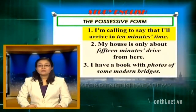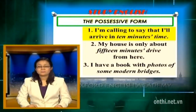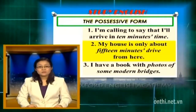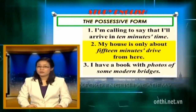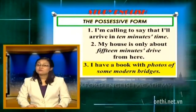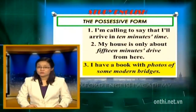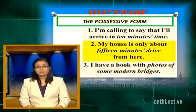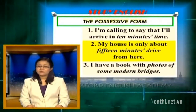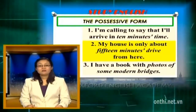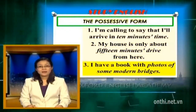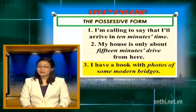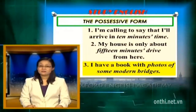Sau đây là một số câu minh họa cho cách dùng sở hữu của danh từ: 1. "I'm calling to say that I arrived in 10 minutes' time." 2. "My house is only about 15 minutes' drive from here." 3. "I have a book with photos of some modern bridges." Trong 3 câu trên, câu 2 dùng sở hữu cách với khoảng thời gian: "a 15 minutes' drive". Câu 3 dùng sở hữu với of vì đây là sở hữu của đồ vật: "photos of some modern bridges".